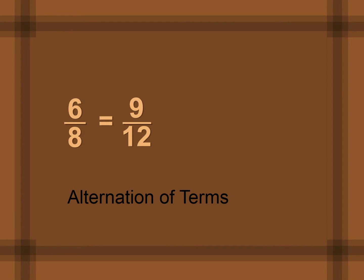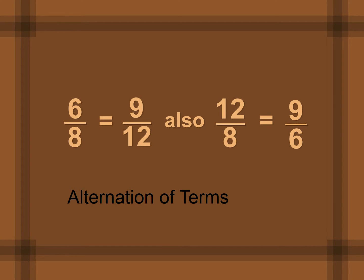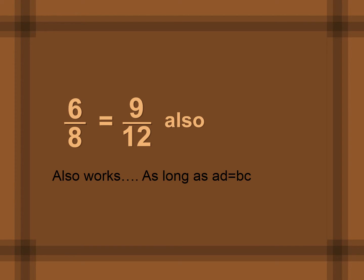Another way to rewrite a proportion is called alternation of terms. You alternate the second and third terms, and you end up with a new proportion. Notice again we're still multiplying the same numbers: 6 and 12, and 8 and 9. It still works because we're still multiplying A and D together and B and C together.